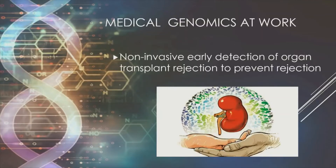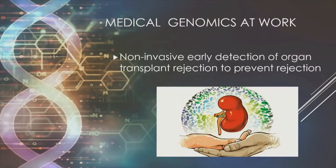It's difficult sometimes to identify the process of rejection until it is well underway, and at that point there are limited strategies available for controlling it. But genomics can identify the early stages of rejection long before they're visible at the cellular level using non-invasive techniques — for example, a blood sample to detect kidney or liver transplant rejection. This technology allows doctors to have more flexibility in dealing with the prospects of an organ rejection.